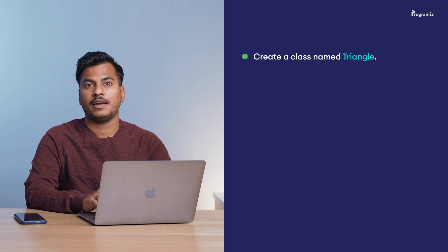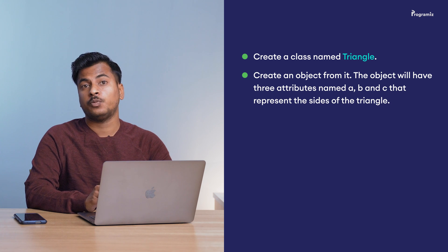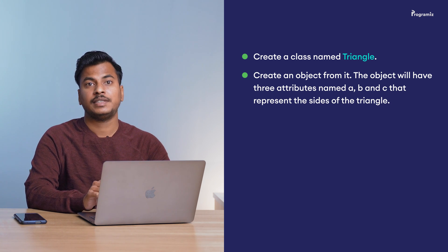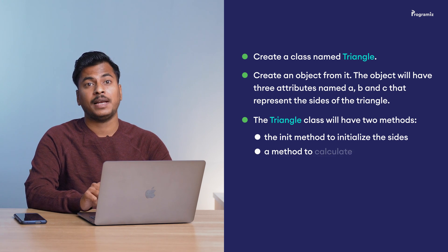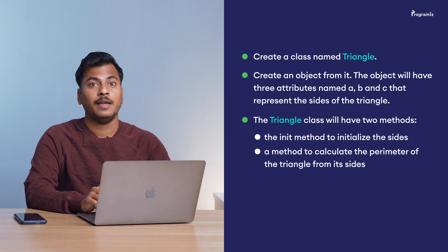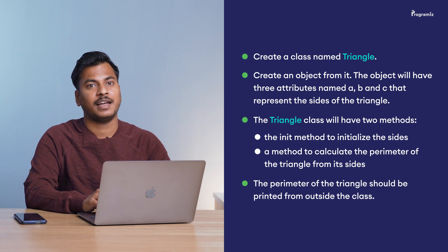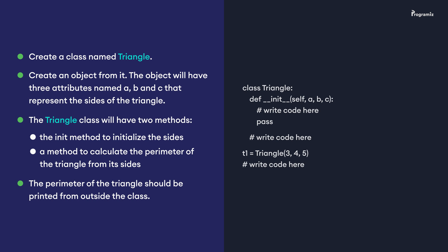Before we end this video, here's a task for you. Create a class named Triangle and create an object from it. The object will have three attributes A, B, and C that represent the sides of the triangle. The Triangle class will have two methods: the __init__ method to initialize the sides, and a method to calculate the perimeter of the triangle. The perimeter should be printed from outside the class. You'll find the complete answer along with source code in our GitHub repository — the link will be in the description. If you like this video, hit the like button and subscribe. Happy Programming!